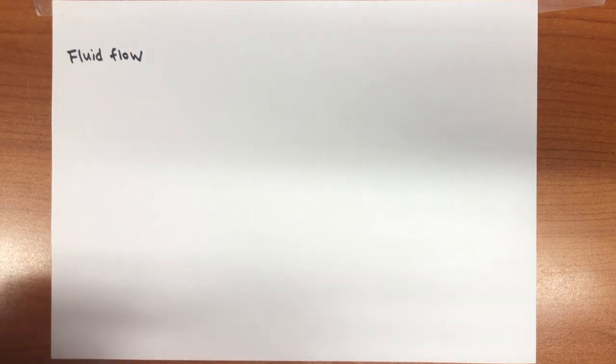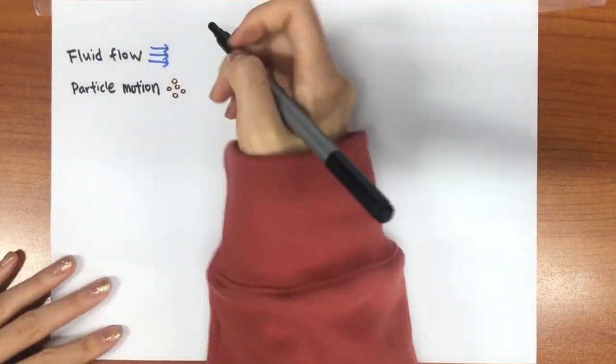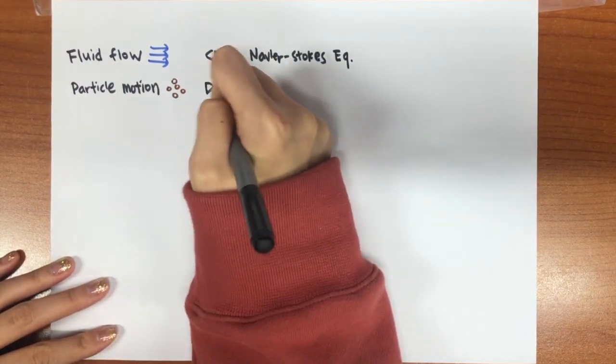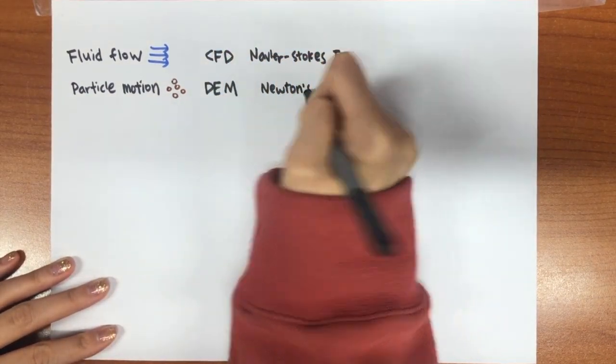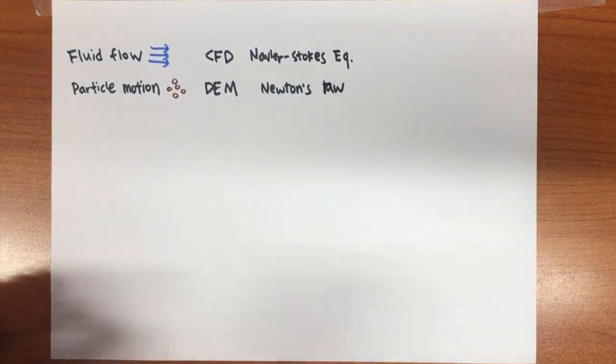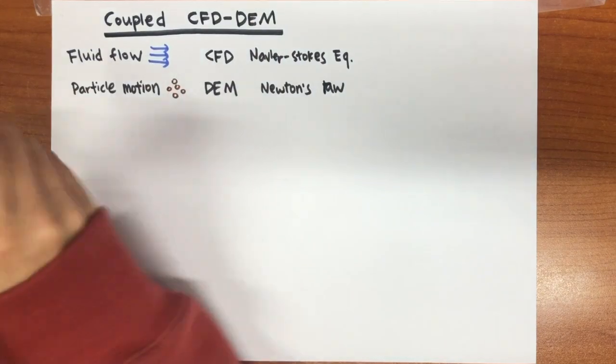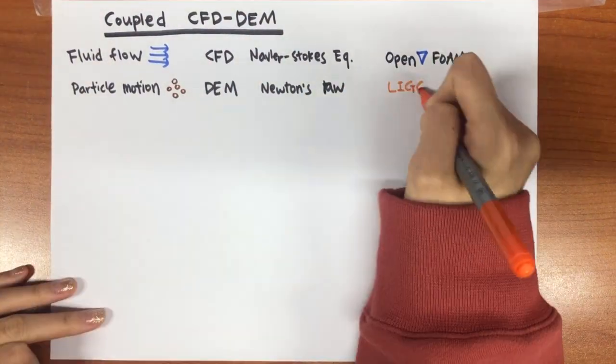To describe soil erosion behavior, fluid flow and particle motion are needed. The fluid is modeled with CFD by solving the Navier-Stokes equation, and particle motion is modeled with DEM based on Newton's law. By combining these two models, interactions between phases are achieved with coupling terms. Open source codes are used in this study.